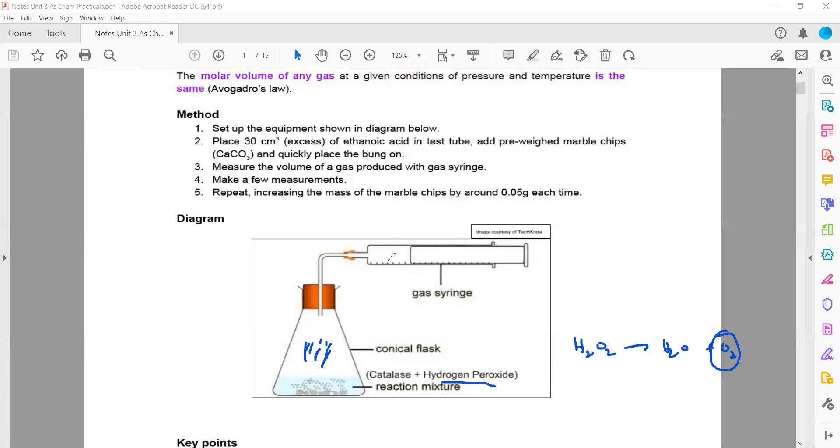Measure the volume of gas produced with a gas syringe. Make a few measurements and repeat, increasing the mass of marble chips by around 0.05 grams each time.